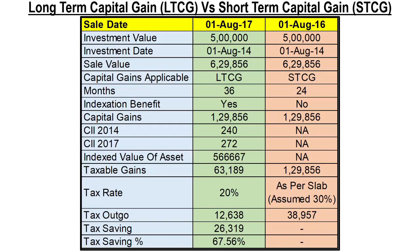In the next illustration, we look at 2 investments of Rs. 5,00,000 each in the year 2014. However, while one is sold after 2 years in 2016, the other is sold after 36 months in 2017. So while one is a long-term capital gain or LTCG, the other is a short-term capital gain or STCG. For purposes of simplification, the sale value in both cases is Rs. 6,29,856. In the case of STCG, since no indexation benefit is applied, the cost of acquisition is the same, which is Rs. 5,00,000, and the capital gains is Rs. 1,29,856. The taxation rule for STCG is that it has to be taxed as per your income tax slab, which is assumed at 30%. Accordingly, the tax payable is Rs. 1,29,856 multiplied by 30%, which is equal to Rs. 38,957.